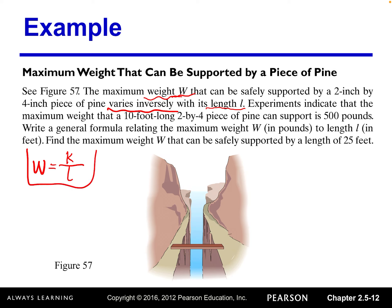Okay, so the first sentence, we can set up the model like that. And then the next sentence is giving us one instance. We can use that to solve for the coefficient k. It says experiments indicate the maximum weight that a 10 foot long wood can support 500 pounds. So that means when w equals 500, and the length is 10 foot long. So we plug in these two values into our model. So we have 500 equals k times l, which is 10.